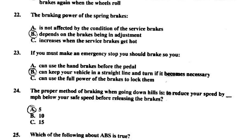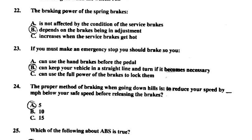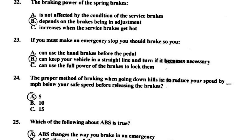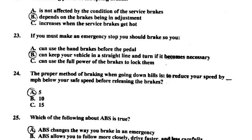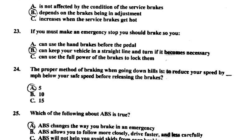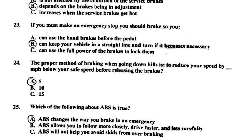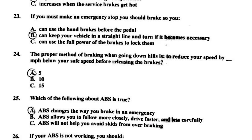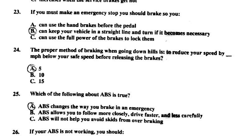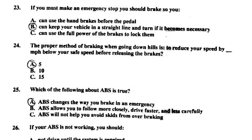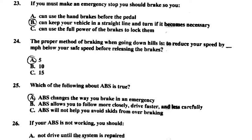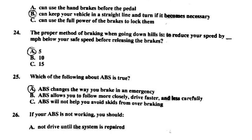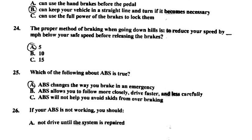Number twenty-three: if you must make an emergency stop, you should brake so — B, you can keep your vehicle in a straight line and turn if it becomes necessary. Number twenty-four: the proper method of braking when going downhill is to reduce your speed by 5 miles per hour below your safe speed before releasing the brakes.